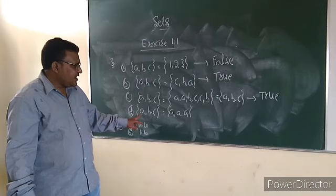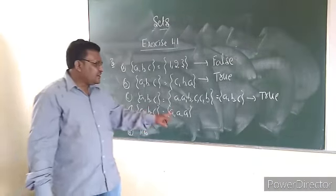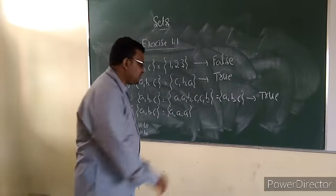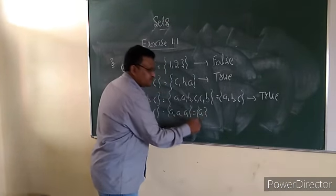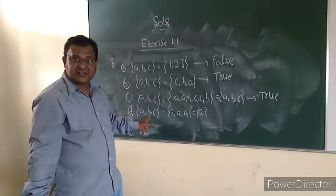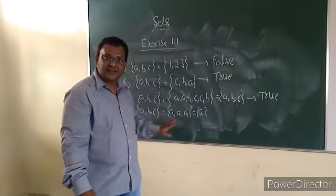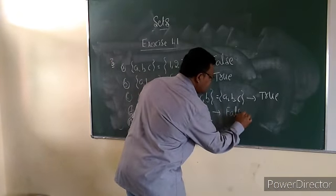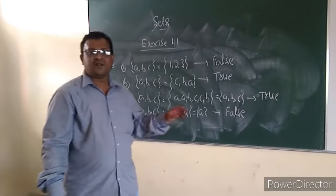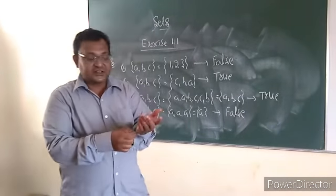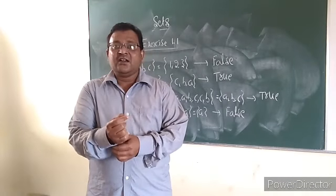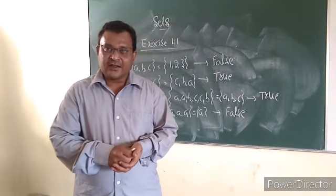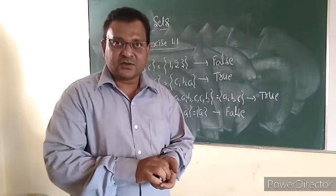Fourth one: {A, B, C} = {A, A, A}. Right-hand side has only one distinct element, A. So {A, B, C} with three distinct elements cannot equal {A} with only one element. Both are not the same. So the answer is false. The next two are homework. Hope you understood today's class. Next class, some more definitions, rules, and the remaining problems in the exercise. Have a good day.